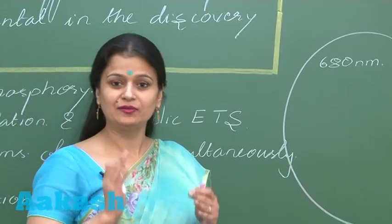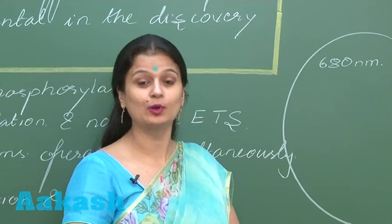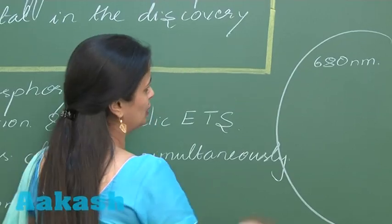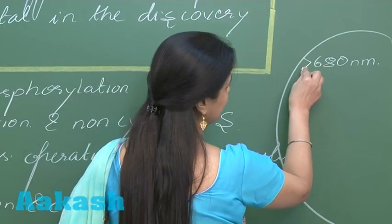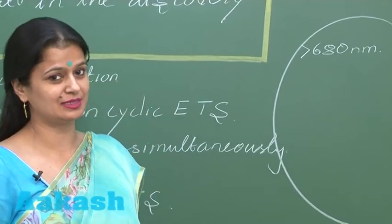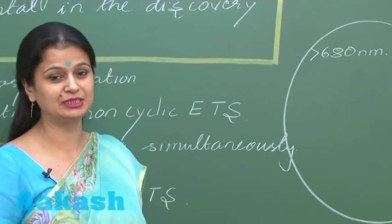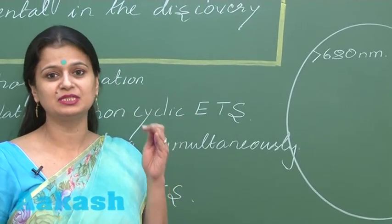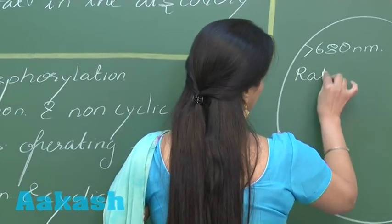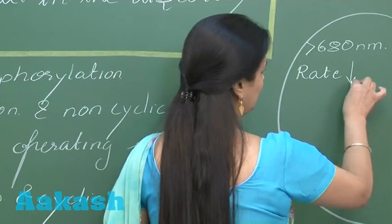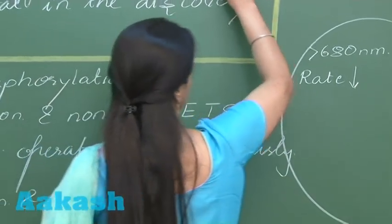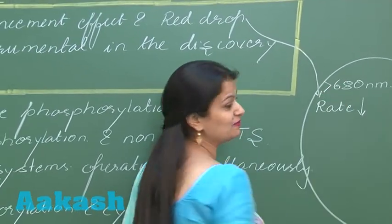Emerson measured the rate of photosynthesis and observed that when the light given to Chlorella was more than 680 nanometers, there was a sharp decrease — a sharp fall — in the rate of photosynthesis. That is what he called the red drop effect.